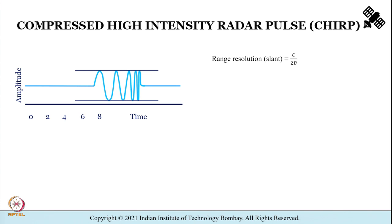Radar engineers use a long pulse with a linearly modulated frequency called a chirp, and with this technique it is possible to increase the range resolution. The expression for range resolution is C divided by 2B, where C is the speed of light and B is the bandwidth. This was a quick recap of the concepts covered in module 2.